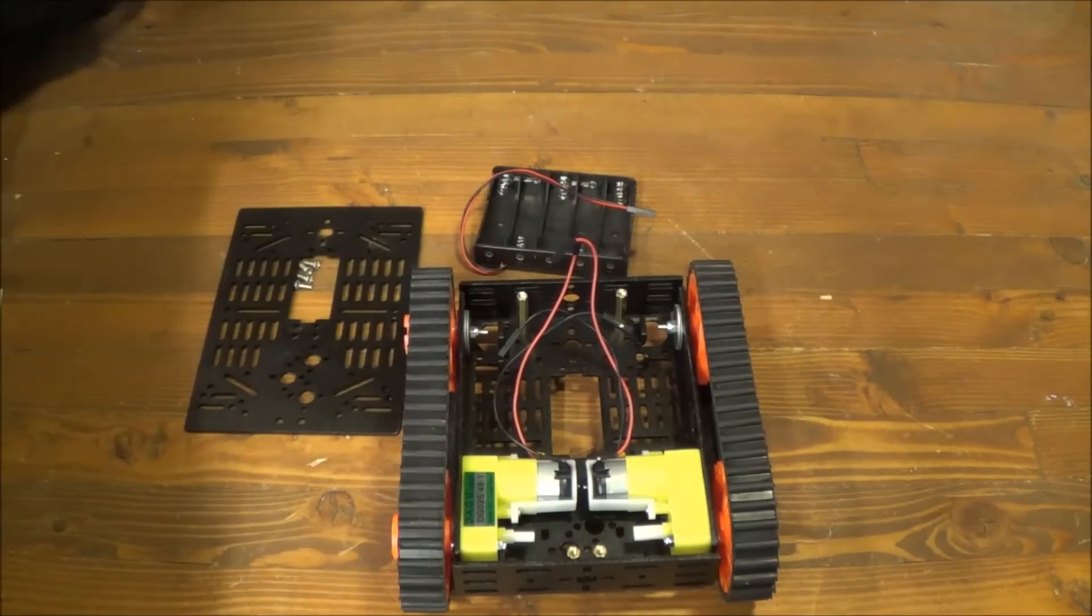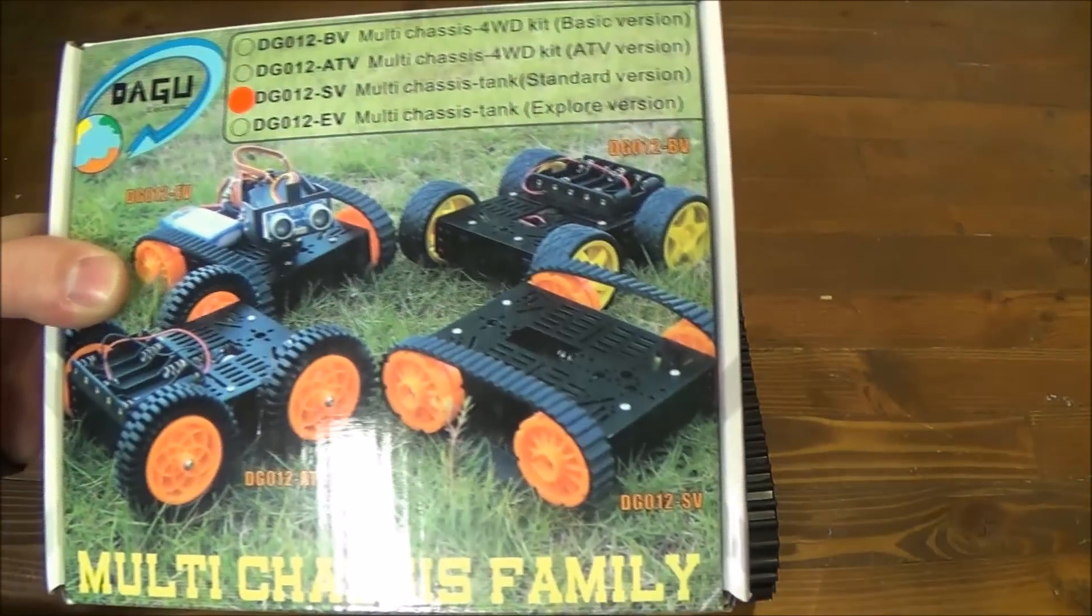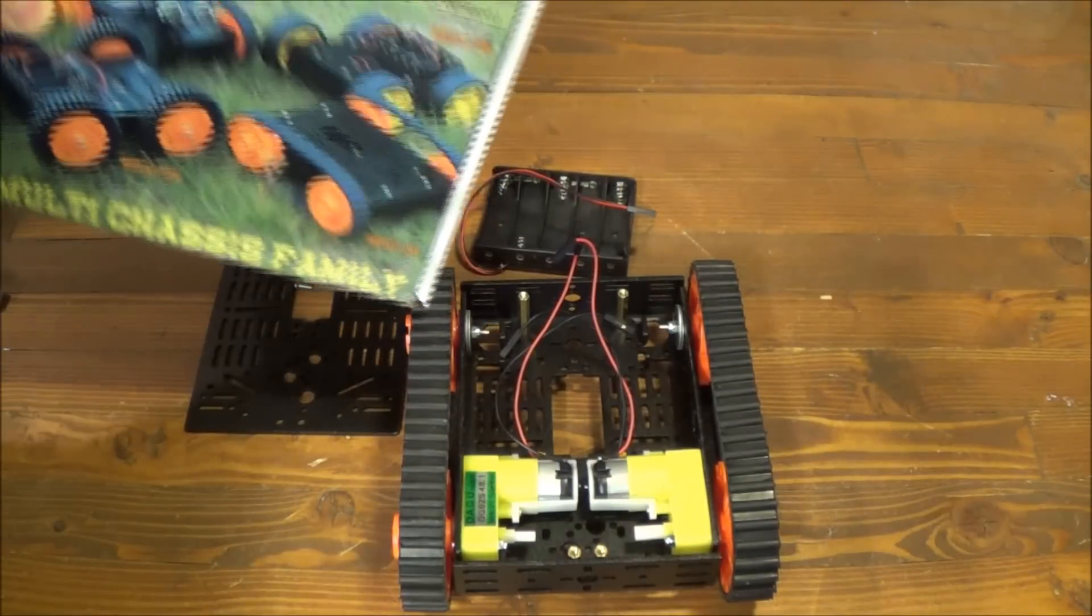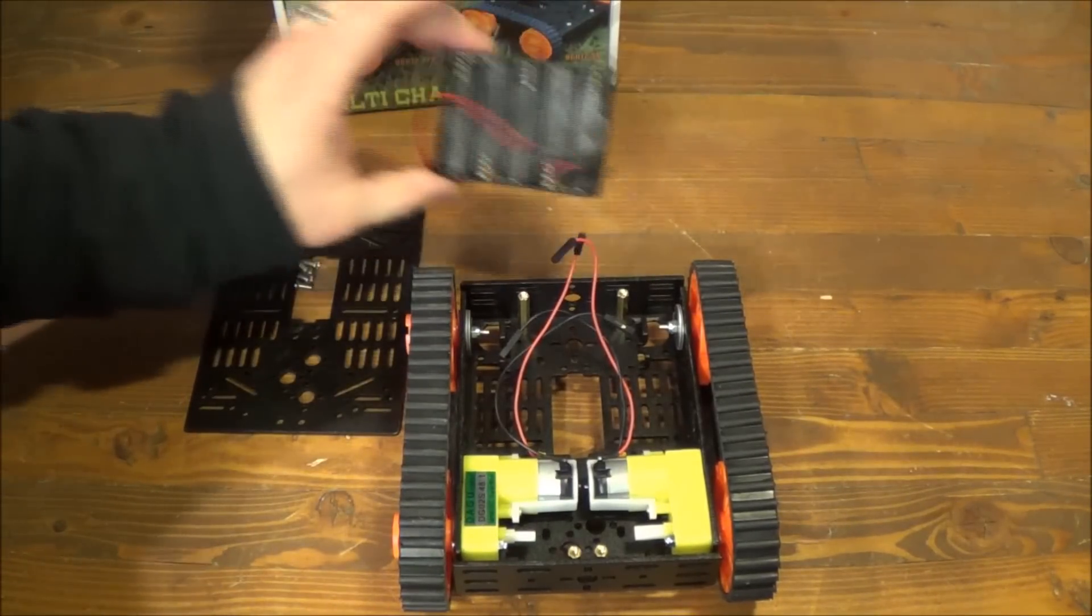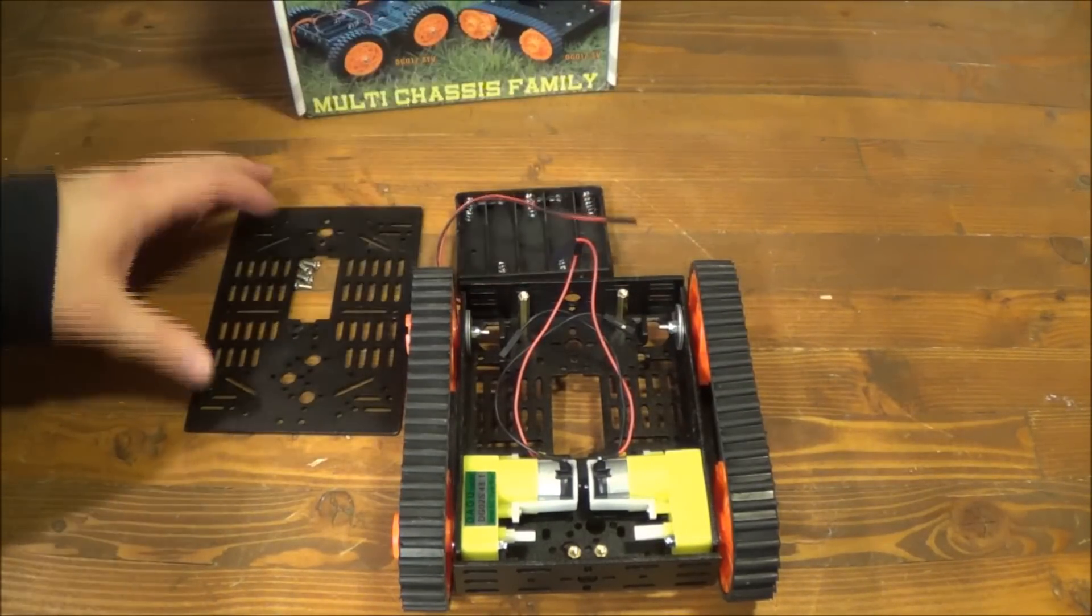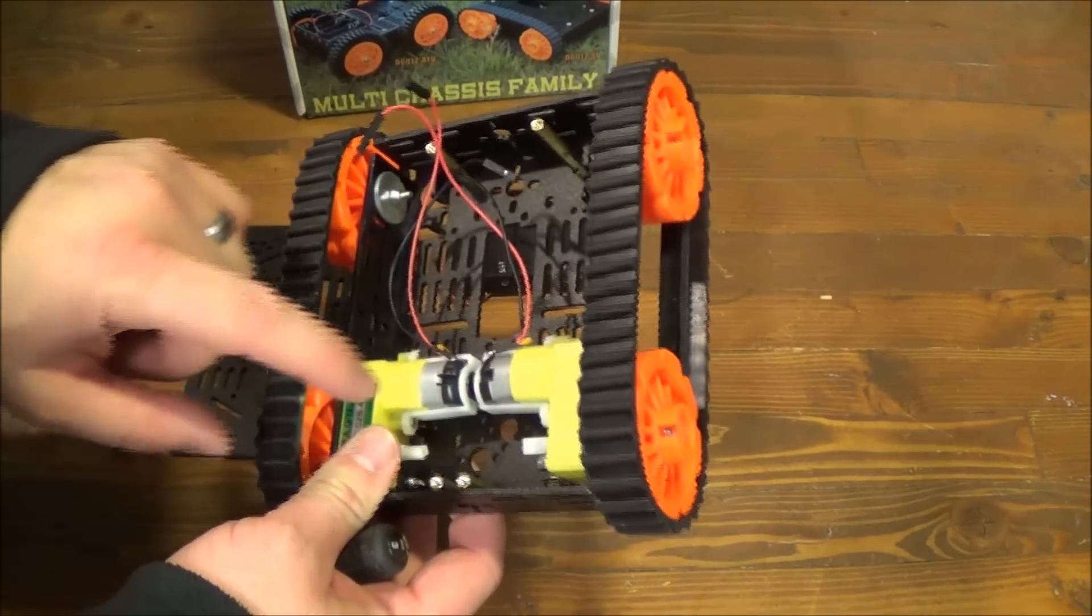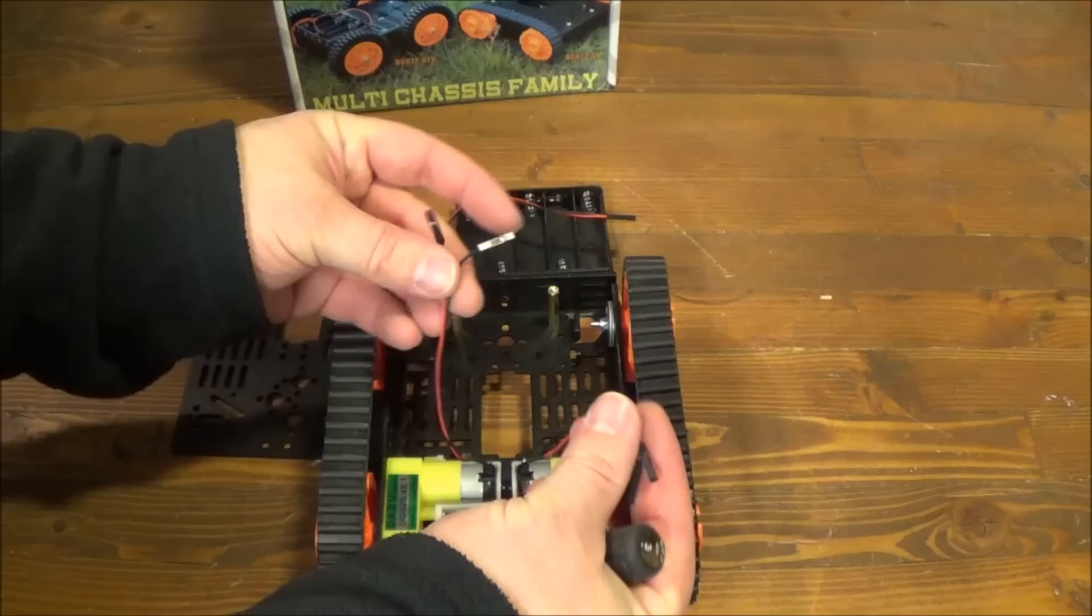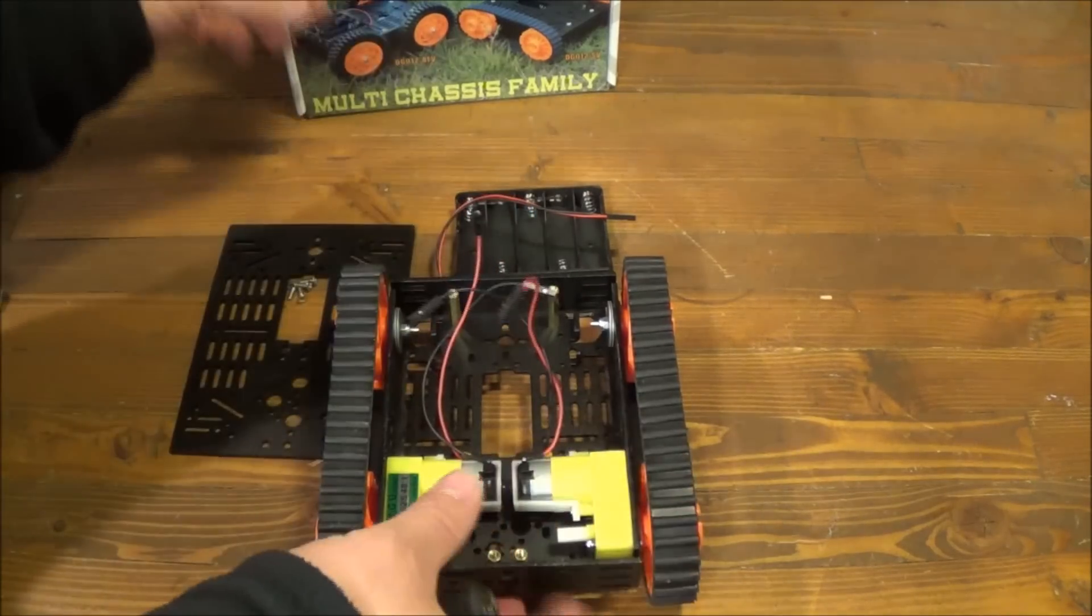So this is what you get with this Jagu multi chassis kit here. This is the tank chassis version. It comes with a little battery pack. Go ahead and put the wheels on. There's bearings on there and attach the motors. The motors just have a red and black wire coming off of them.